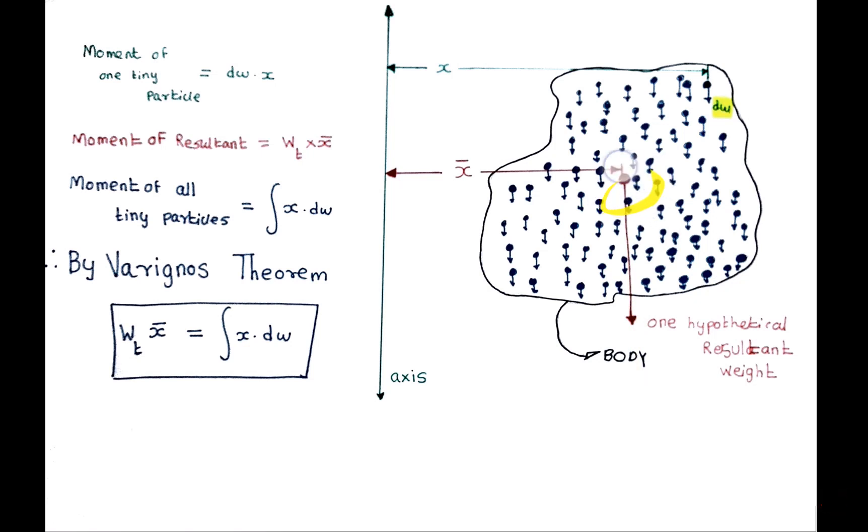Thus, this point becomes the center of gravity. I can conclude that center of gravity is a point on the body through which the hypothetical resultant weight of all these tiny particles passes through.